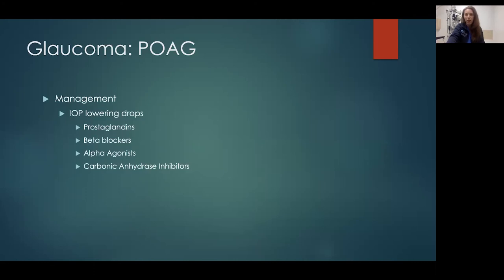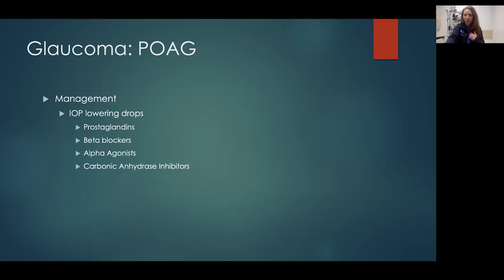Management of these patients is with IOP-lowering drops. Prostaglandins are first line — latanoprost, which is Xalatan. Beta blockers — we give timolol often. Alpha agonists — brimonidine. And carbonic anhydrase inhibitors — dorzolamide. All of these have multiple side effects so it takes a while to optimize them. The prostaglandins are once daily, beta blockers twice daily, alpha agonists three times daily, and carbonic anhydrase inhibitors three times daily. If patients have end-stage glaucoma they may be taking drops ten times a day. These patients with advanced glaucoma really have trouble adhering to management and often progress to needing surgical options.